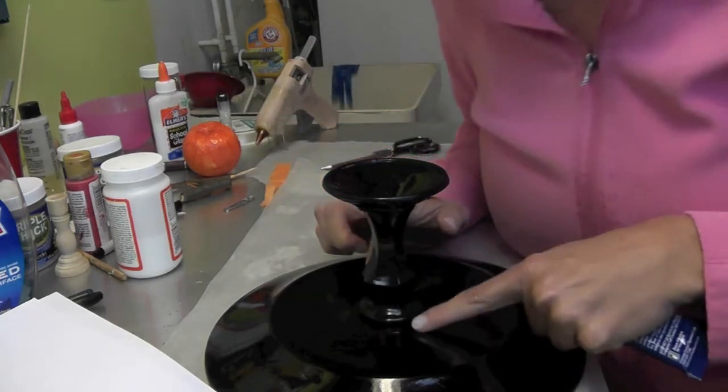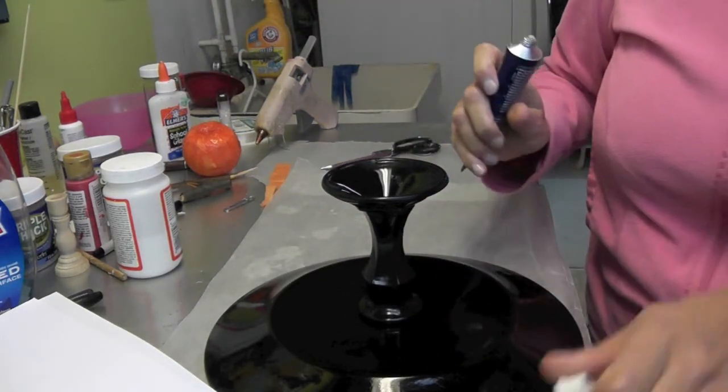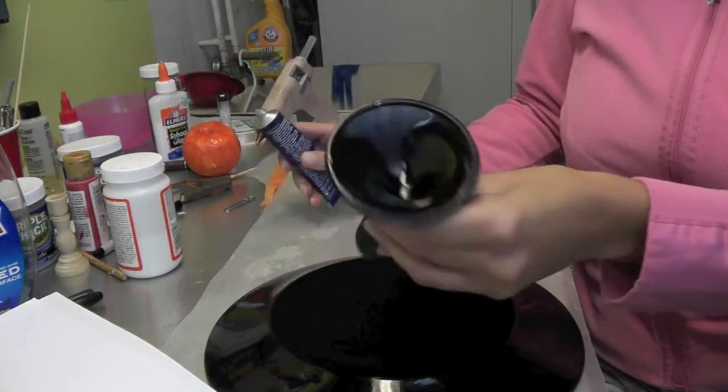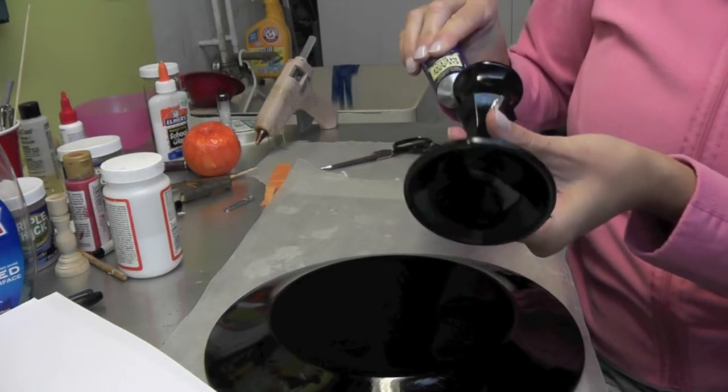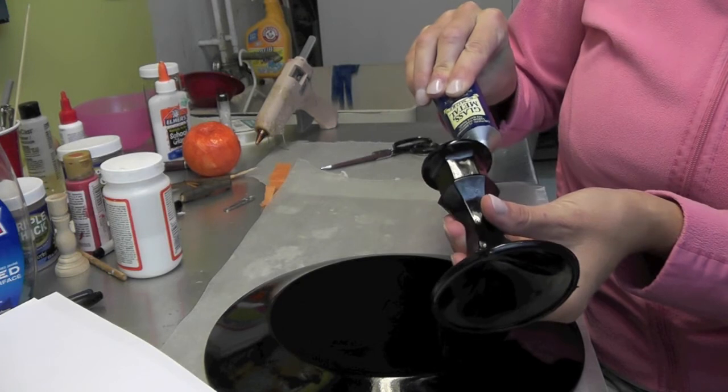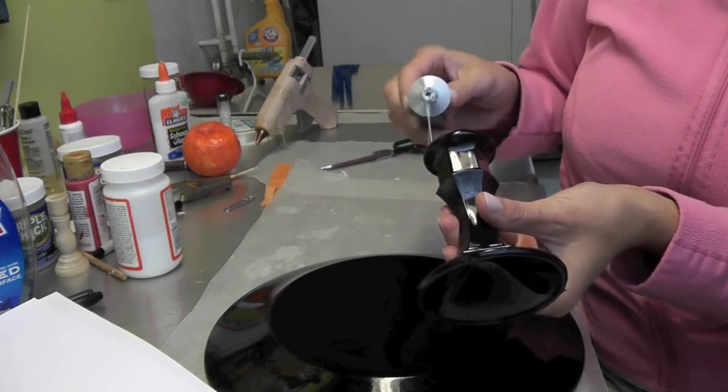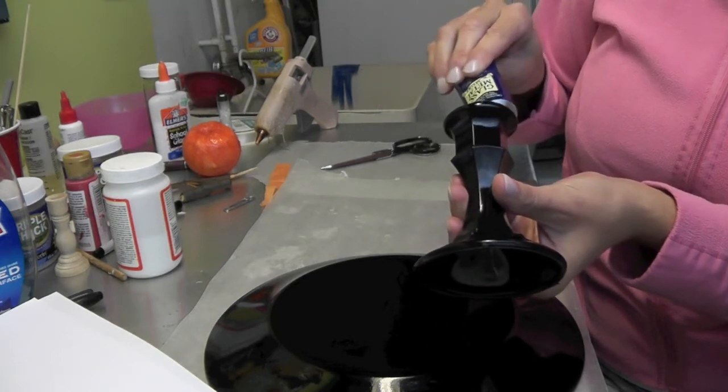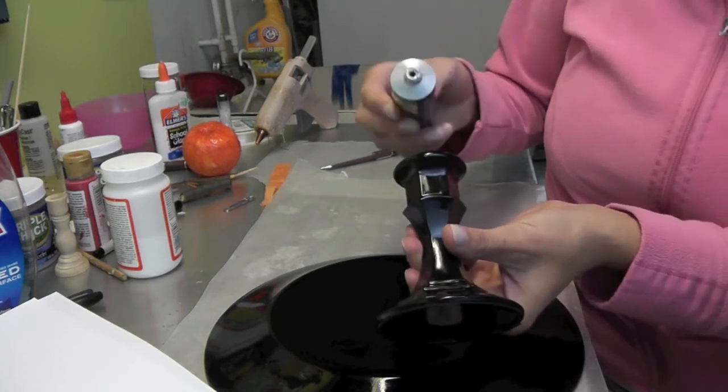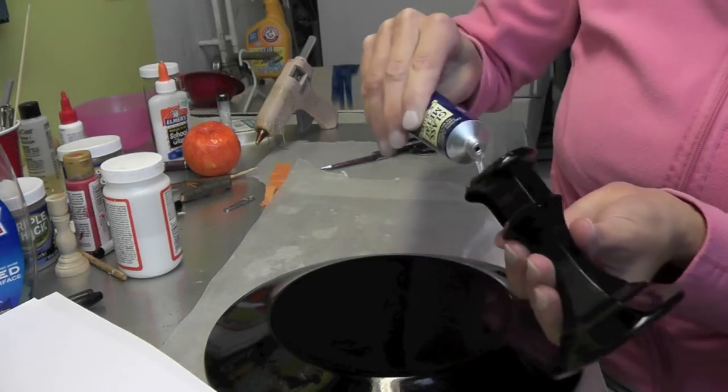So I'm going to kind of eyeball the center. Open the glue. And I'm going to put, and follow the directions, because sometimes some glues will tell you to put it on both pieces before adhering it, but this one does not require that. So I'm going to put a generous bit on there. And, obviously, it dries clear, because it is clear.